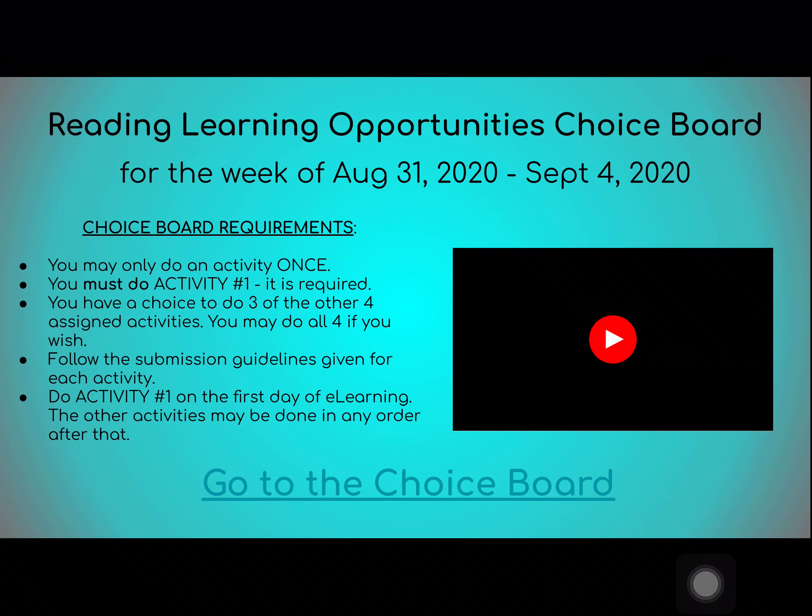The third bullet point: you have a choice to do three of the other four assigned activities. You may do all four if you wish. Of the five activities that are assigned to you, you only need to do four. You must do number one, and then you do three of the remaining four.